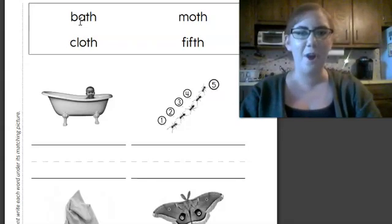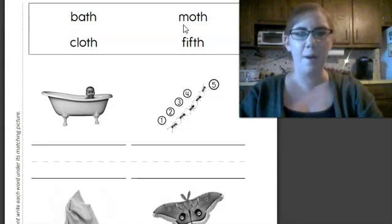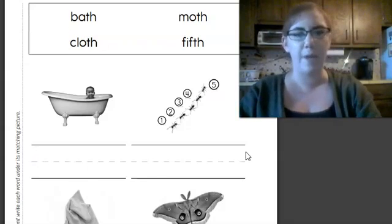Remember the sound that TH can make. That's right, or TH. Let's look at the first word. B-a-th, bath. Let's look at the next word. C-l-o-th, cloth. The third word. M-o-th, moth. Fifth, like the number five, fifth. All of these TH sounds are the soft TH, not the buzzy TH. Read the words and put them underneath the picture they belong to.